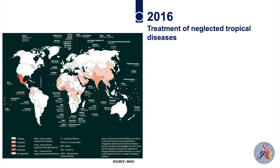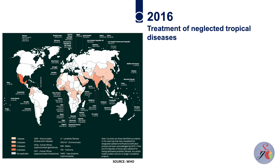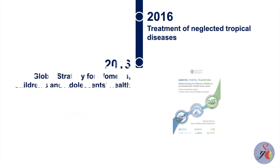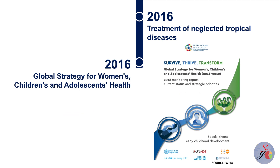By December 2022, a number of countries, territories and areas had eliminated at least one neglected tropical disease. In 2016, the global strategy for women's, children's and adolescents' health was launched. The strategy's objectives of survive, thrive and transform aim to promote and protect health and support well-being.